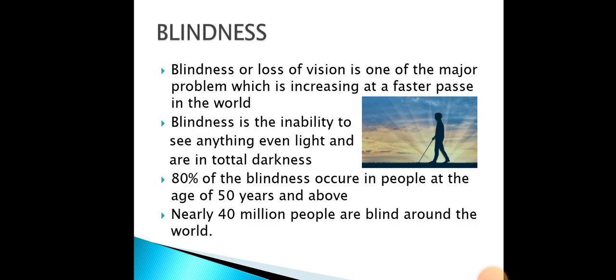Now I am going to discuss what blindness is. Blindness or loss of vision is one of the major problems which is increasing at a faster rate in the world. Blindness is an inability to see anything, even light, leaving one in total darkness. 80% of blindness occurs in people at the age of 50 years and above. Nearly 40 million people are blind around the world.